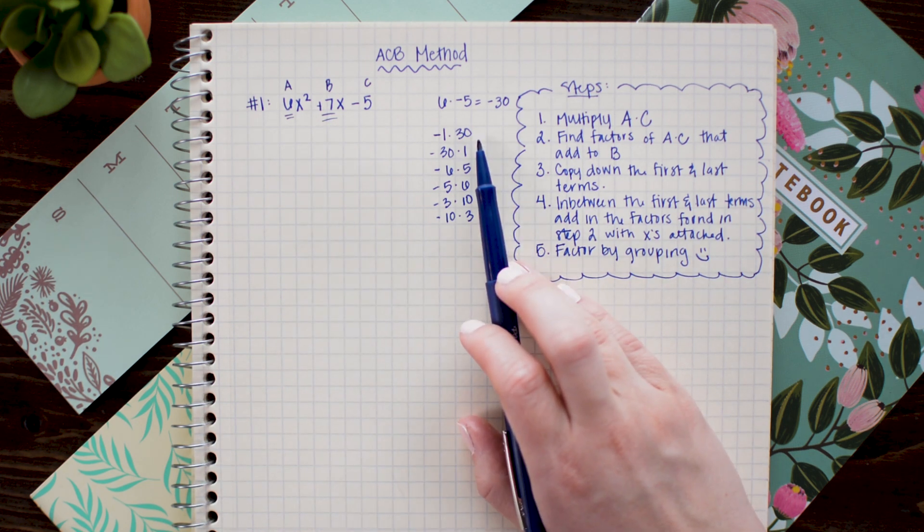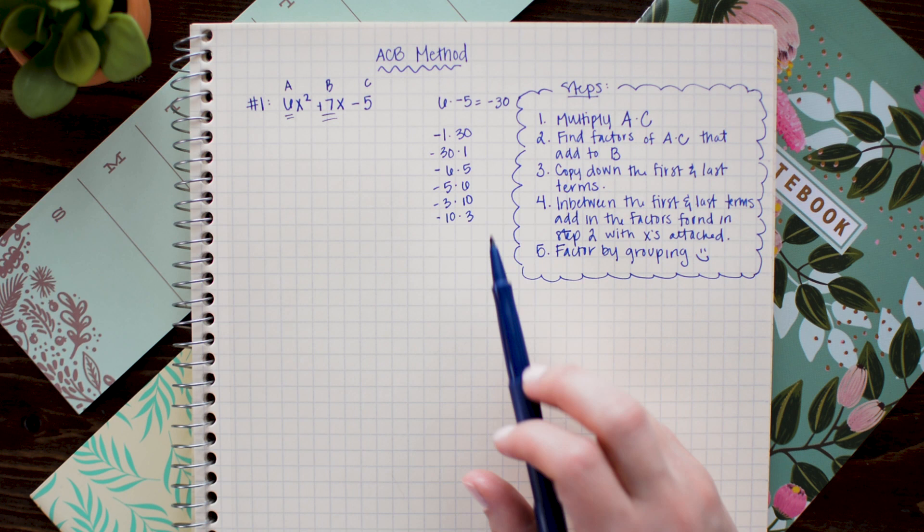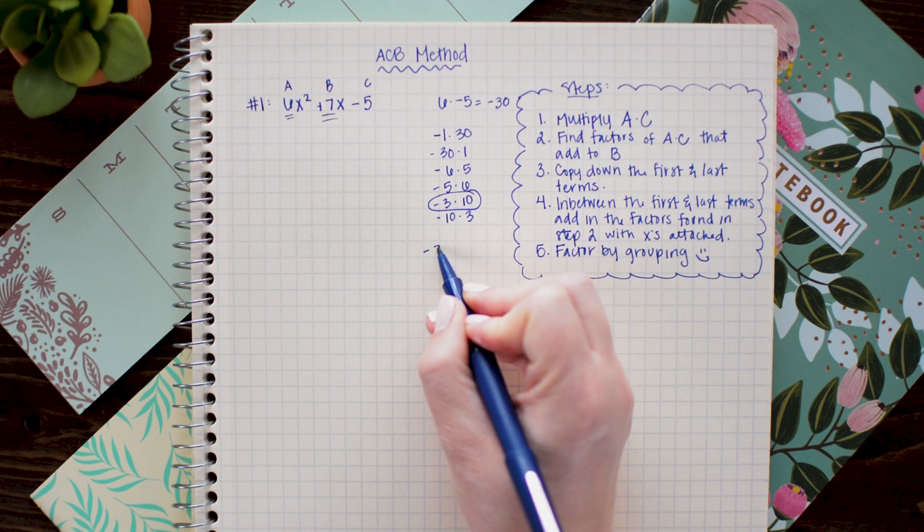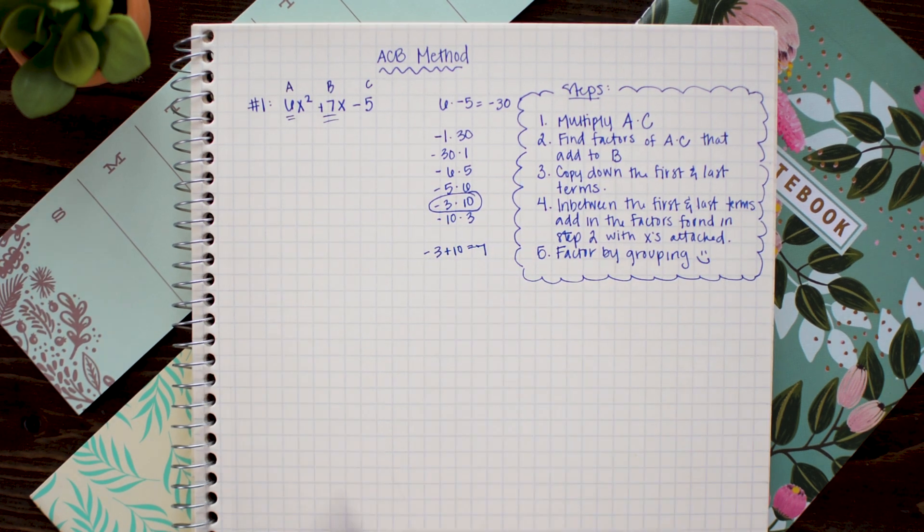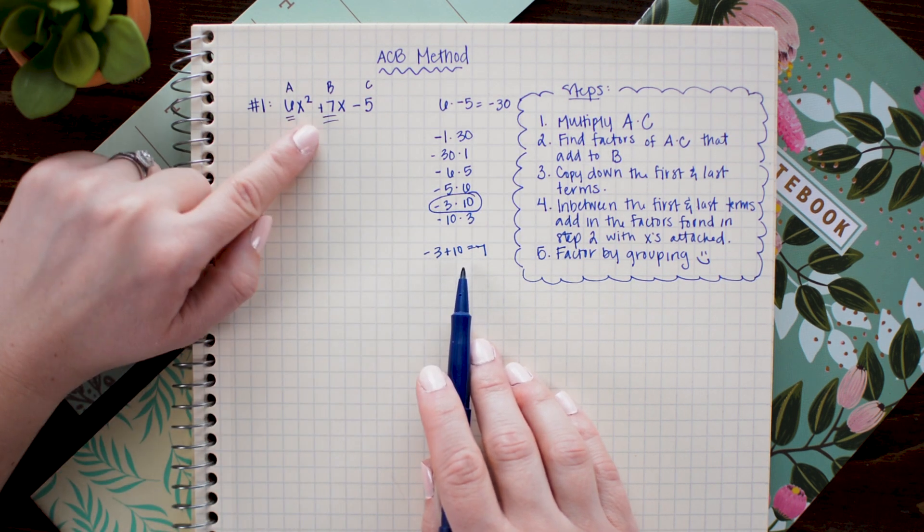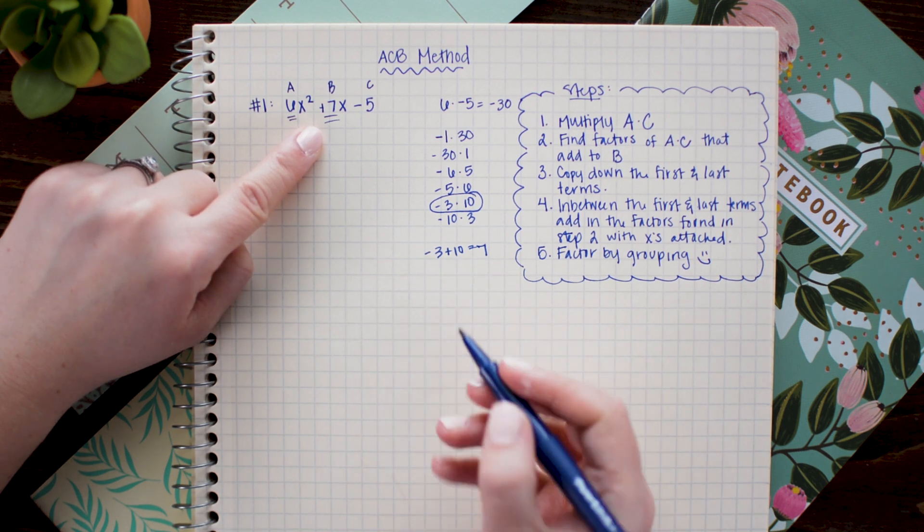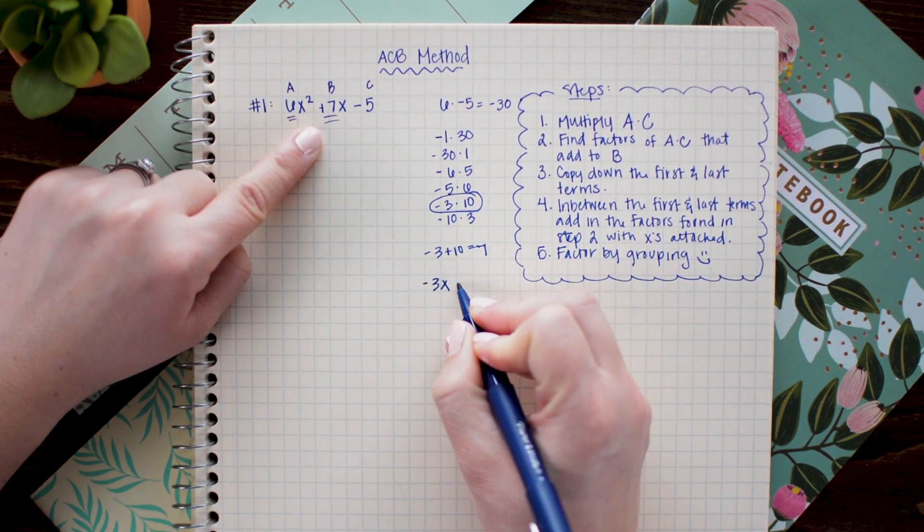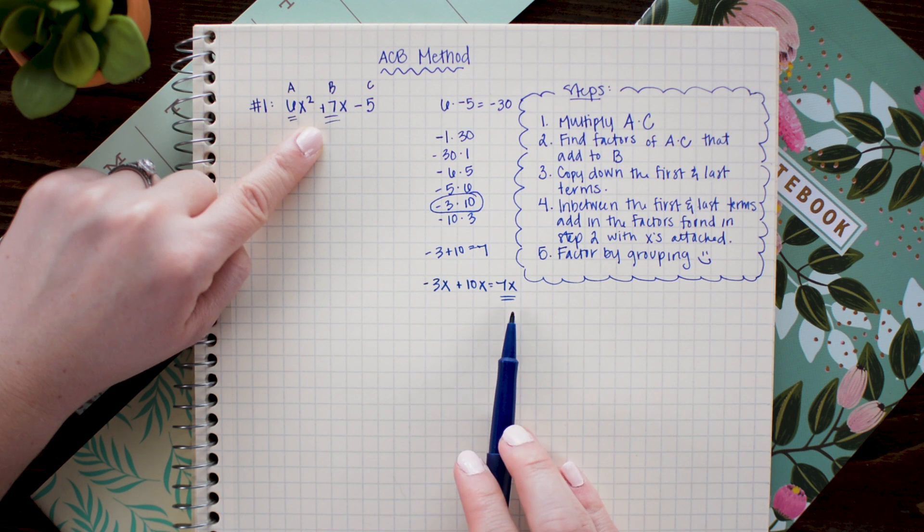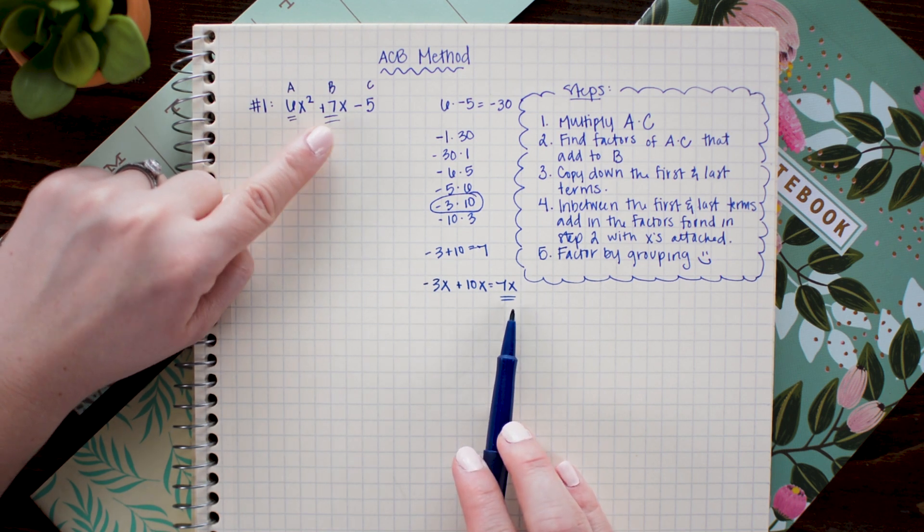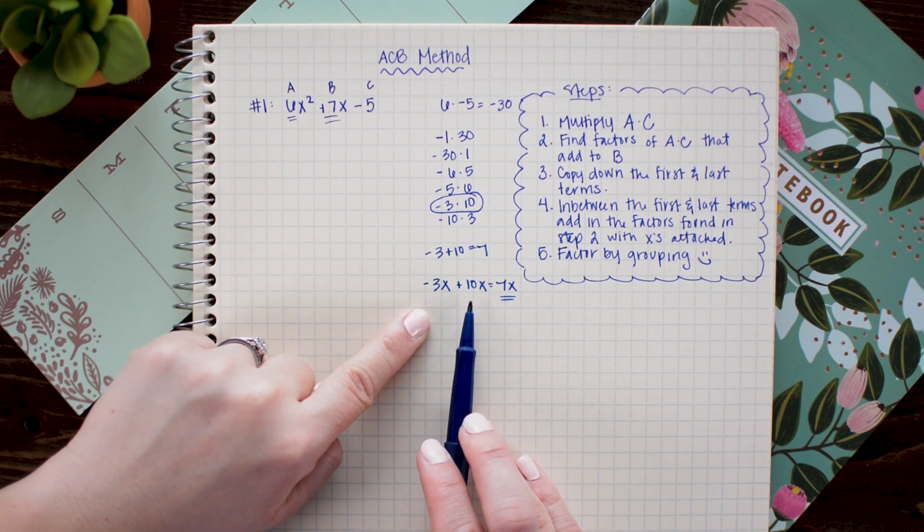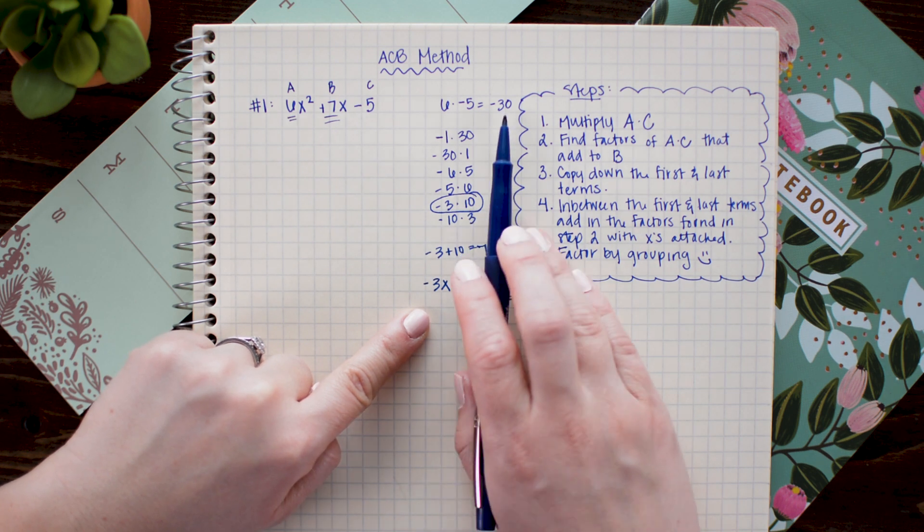I'm just going to skim this list and see which ones work. So the pair that works is negative 3 times 10 and because negative 3 plus 10 equals 7. Now that's important because we want our factors that we're going to choose to combine to the middle term. So here if I attach x's to these I see that negative 3x plus 10x equals 7x and 7x is our middle term. So what I'm doing essentially is in the next step I'm going to replace 7x with negative 3x plus 10x. And I found the negative 3 and 10 remember from the factors of a times c.